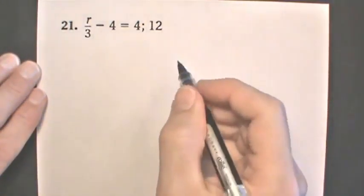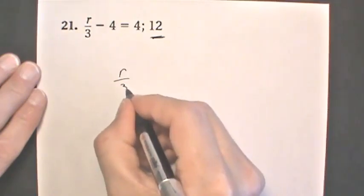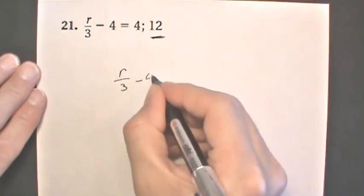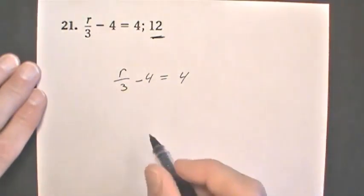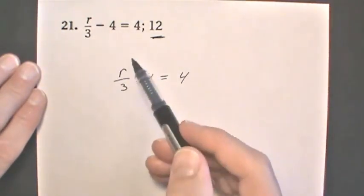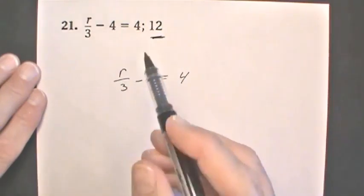Problem 21: we need to determine if 12 is the solution for this equation. We have r divided by 3 minus 4 equals 4. So we replace r with 12.